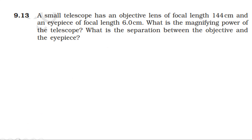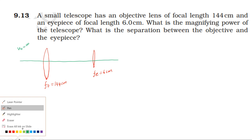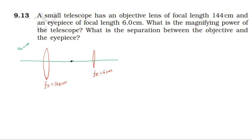Now we have to solve the problem. The objective lens focal length F₀ is 144 cm. The image formed by the objective lens acts as an object for the eye lens, and the final image is formed at infinity. So this telescope is used in normal adjustment, where the eye lens forms the image at infinity.